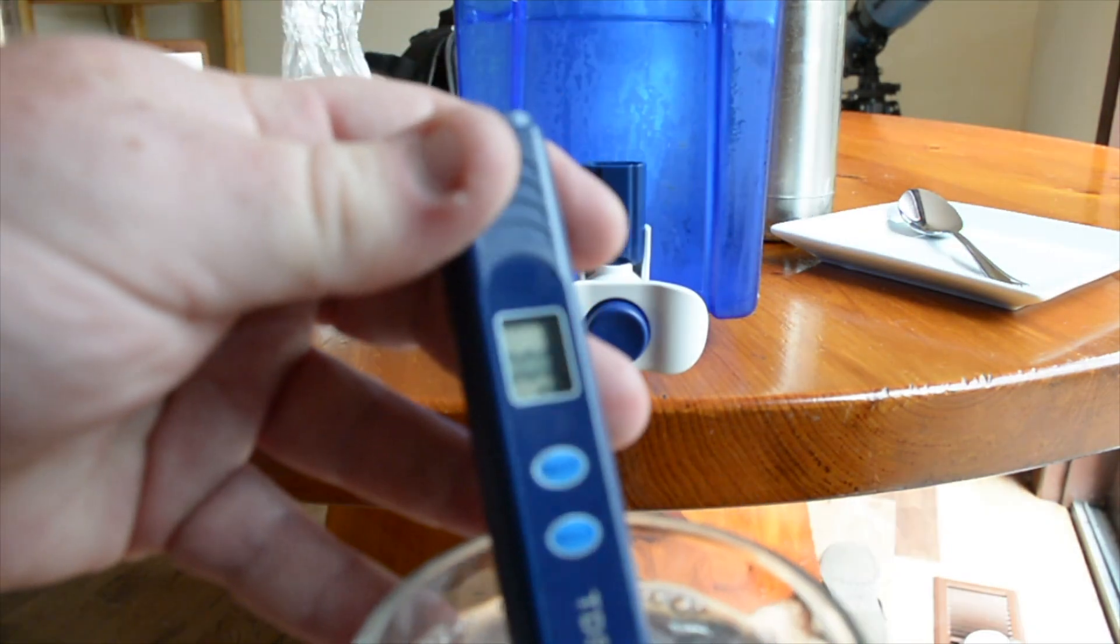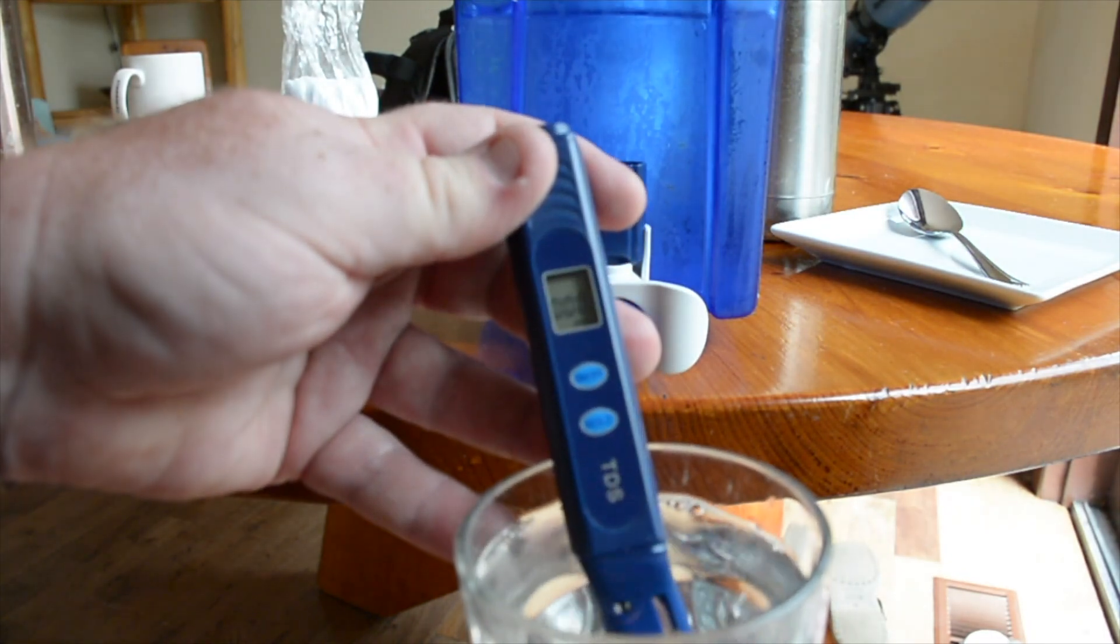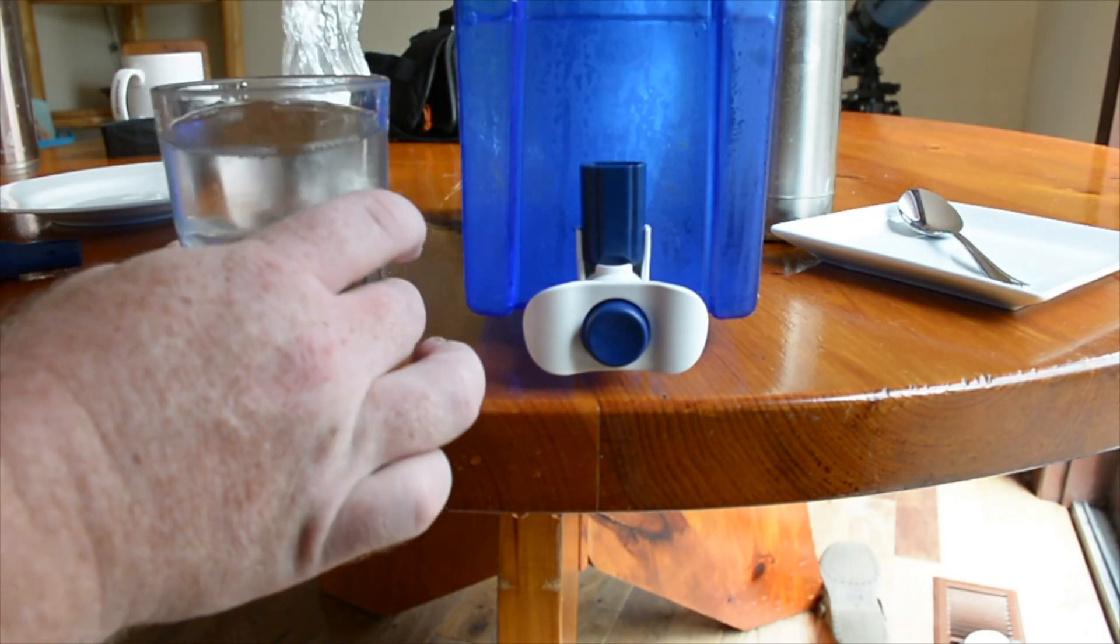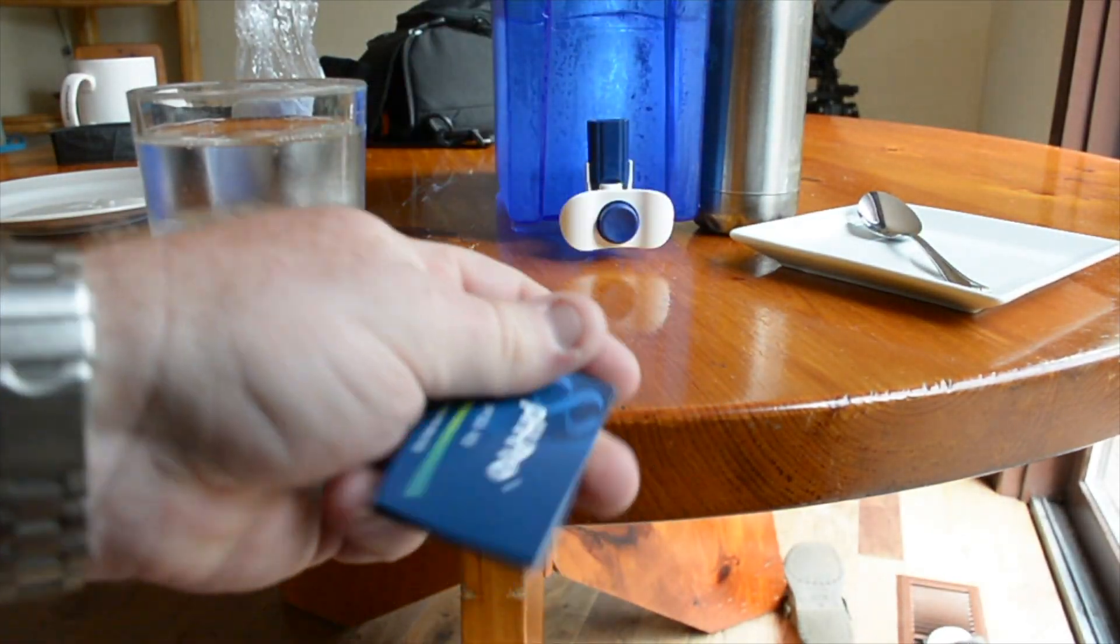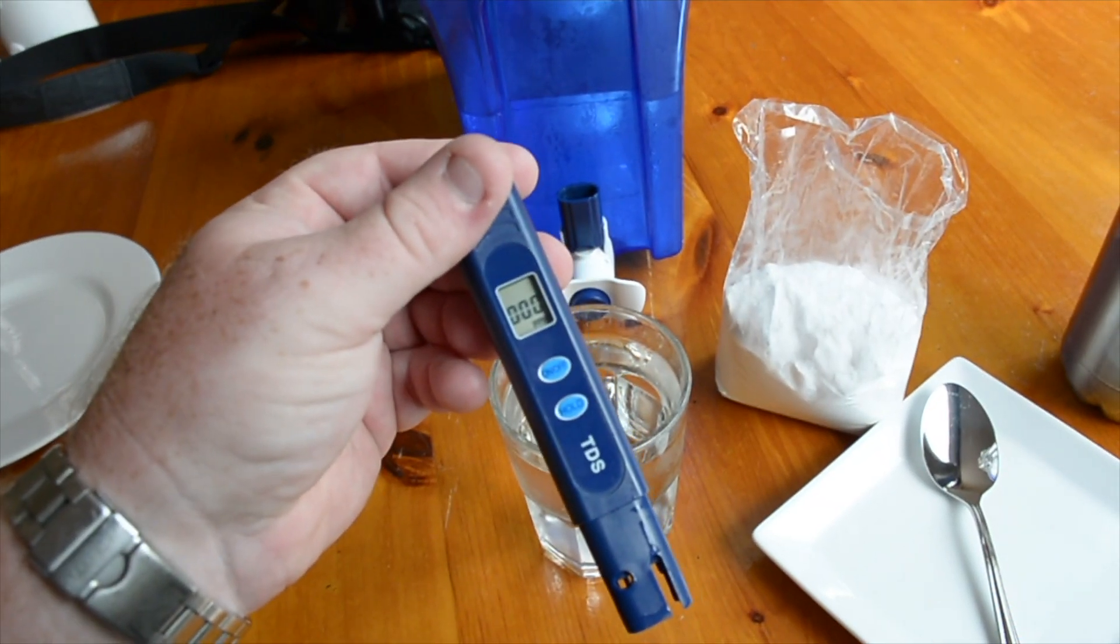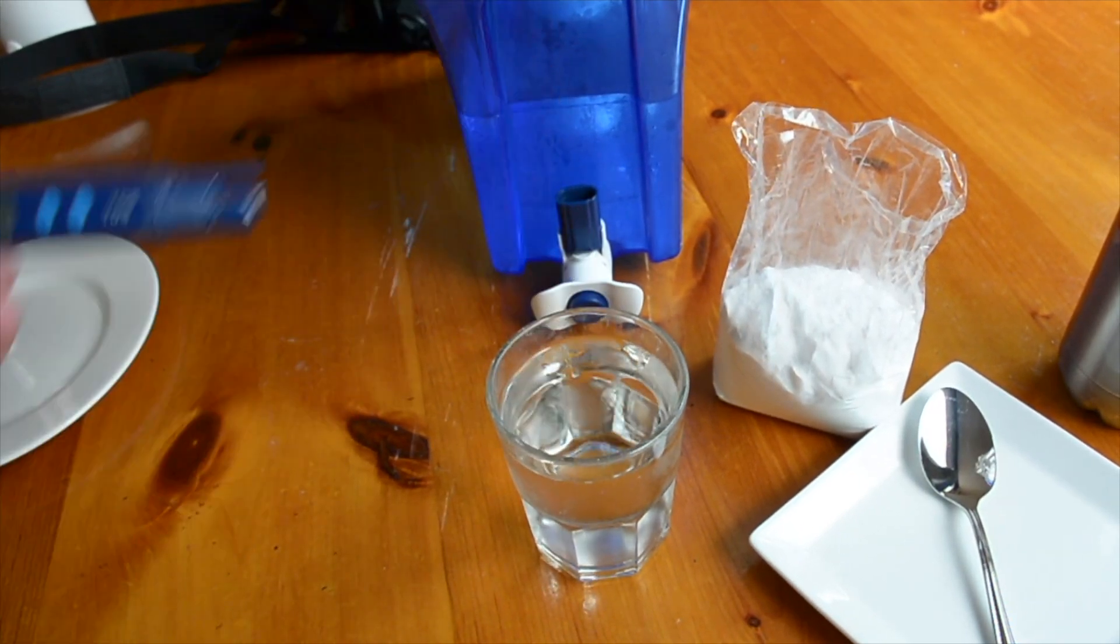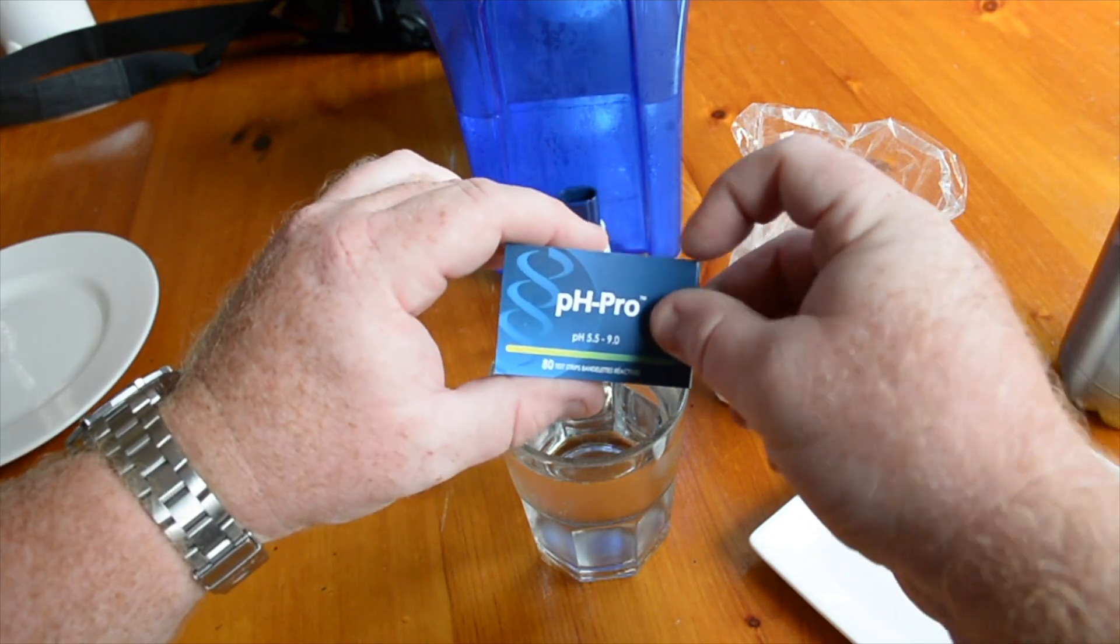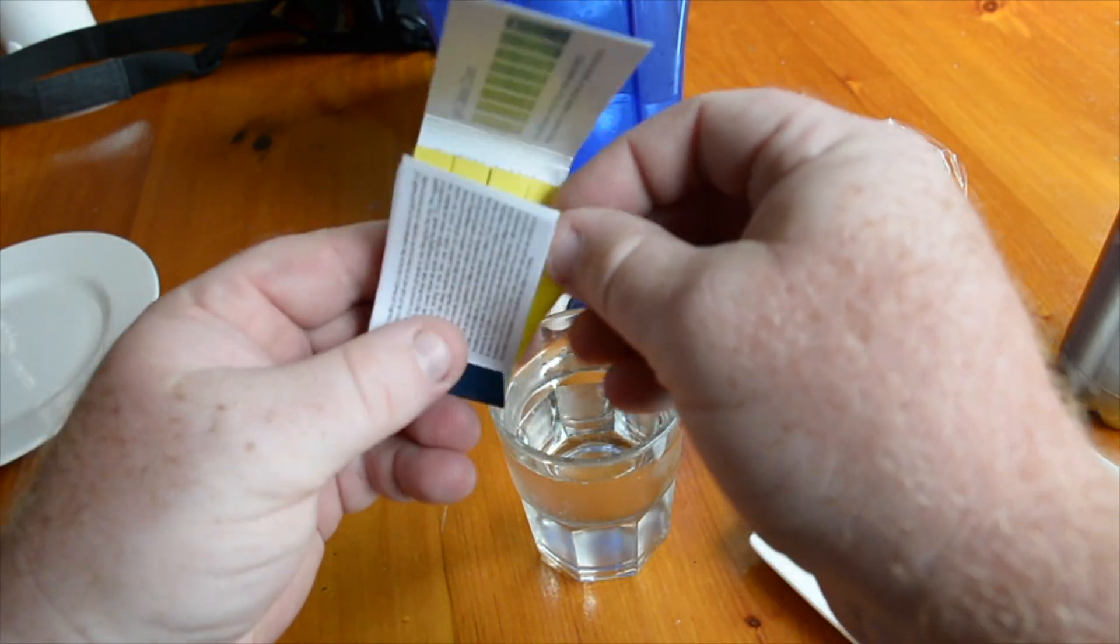The zero water is zero parts per million of TDS, which is total dissolved solids. I bought these test strips called pH Pro. You can see it's still zero, so let's use these pH Pro strips to see what the acidity is.